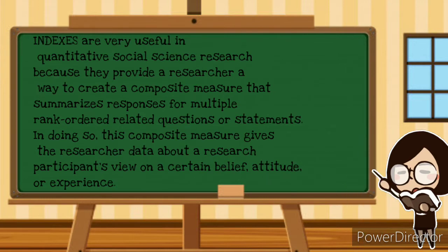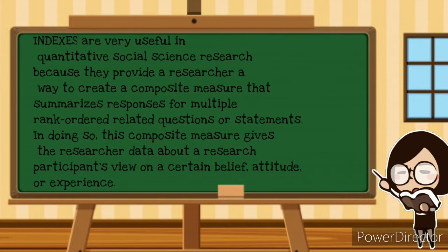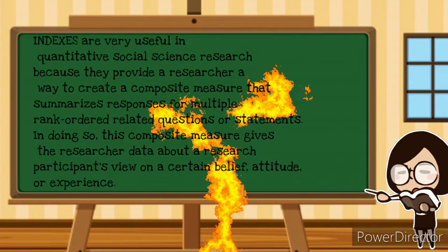Indexes are very useful in quantitative social science research because they provide a researcher a way to create a composite measure that summarizes responses for multiple rank-ordered related questions or statements. In doing so, these composite measures give the researcher data about a research participant's view on a certain belief, attitude, or experience.